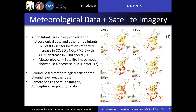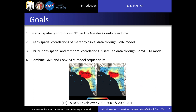Our model uses a combination of meteorological data and air pollutant data, both in the ground and in the atmosphere. We use ground-based meteorological sensor data and remote sensing atmospheric satellite imagery. We will be predicting spatially continuous nitrogen dioxide in Los Angeles County over a large number of time periods. Our model will learn correlations of meteorological data through a graph neural network architecture and also utilize spatiotemporal correlations in satellite pollution data through a ConvLSTM structure. We will combine the GNN and ConvLSTM structures sequentially, using one model's output as an input to the other.